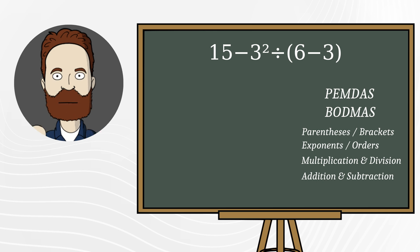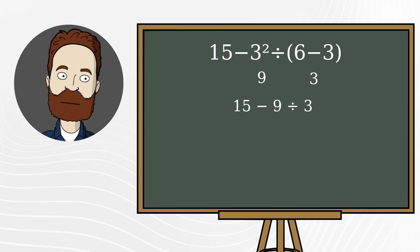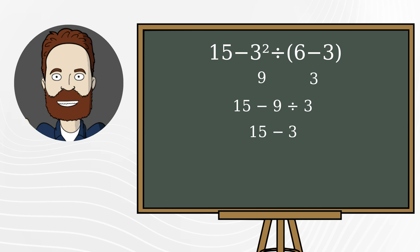Alright, following the rule. Parentheses first. 6 minus 3 is 3. Exponent. 3 squared is 9. Now substitute. Then division. 9 divided by 3 is 3. And finally subtraction. 15 minus 3 is 12. So the correct answer is 12.